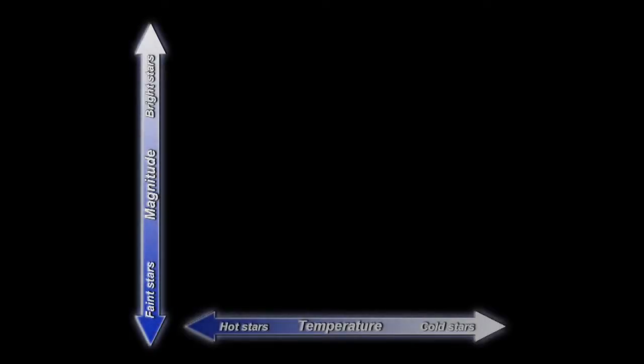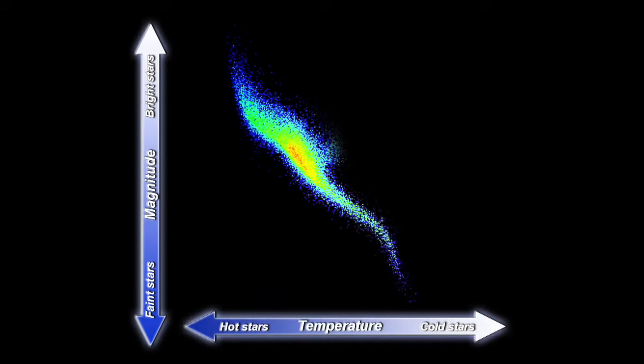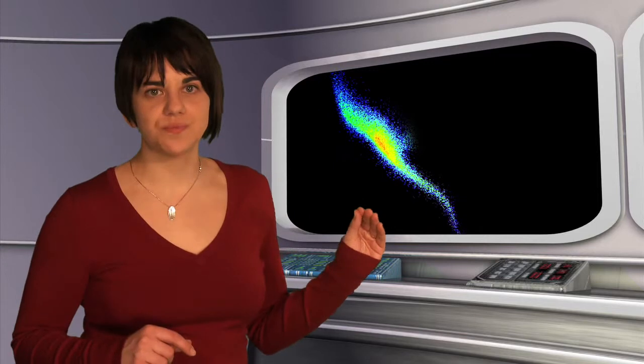Early in the 20th century, Einar Hertzsprung and Henry Russell independently created diagrams in which stars are plotted according to their absolute visual magnitude and their spectral type. This is a typical Hertzsprung-Russell diagram which clearly shows a distribution that is not random. The majority of all stars plotted sit on this belt running across from the top left down to the bottom right. This is known as the main sequence.